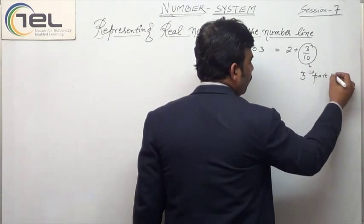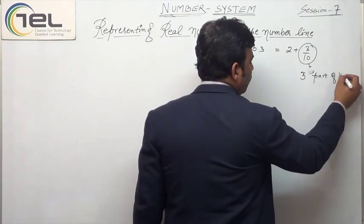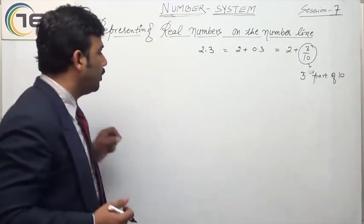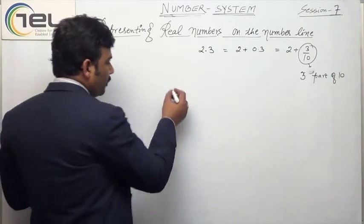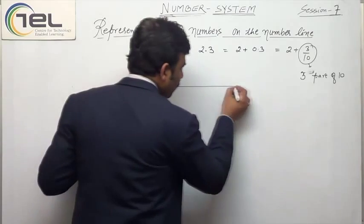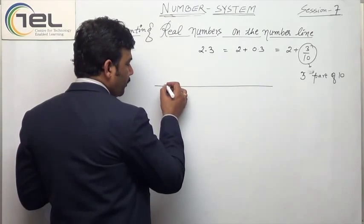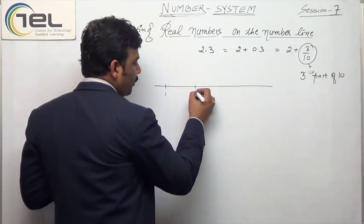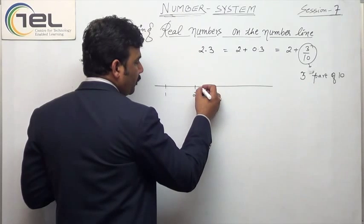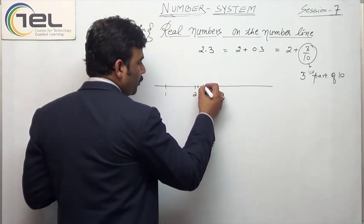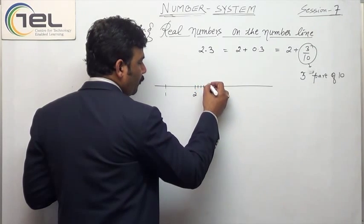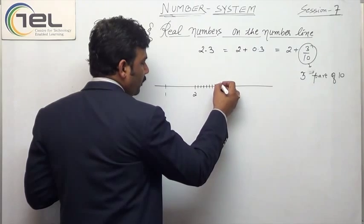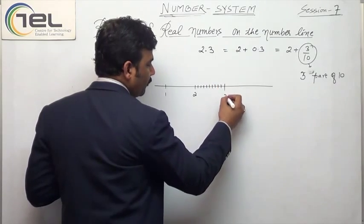You can say 3 parts of 10. If there is a gap, this is a number line. In this number line, if this is 1 and this is 2, then we divide: 1, 2, 3, 4, 6, 7, 8, 9 — and this is 3.